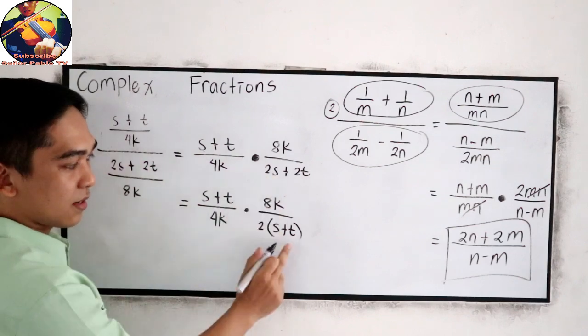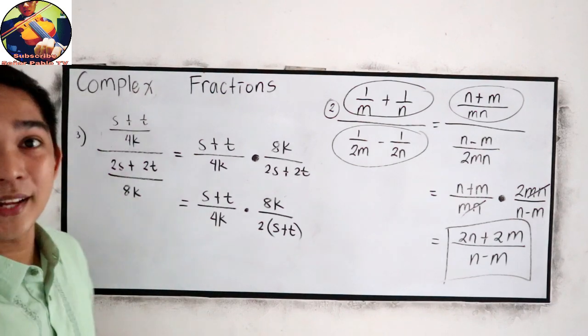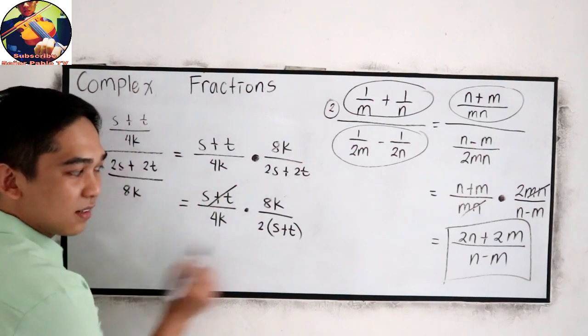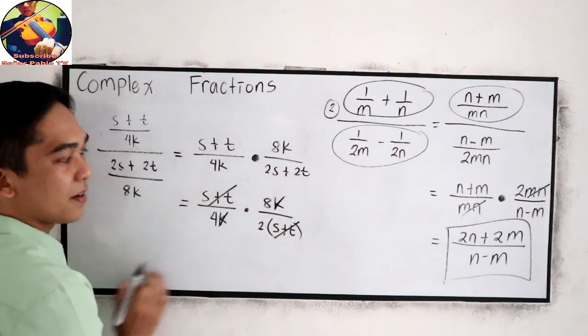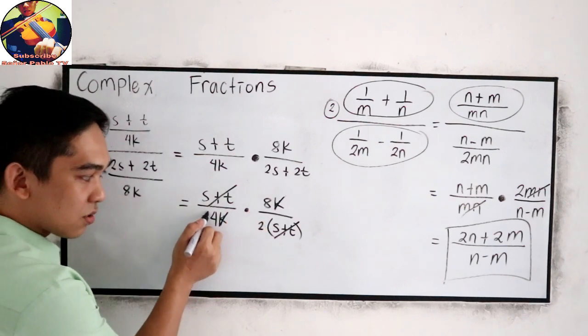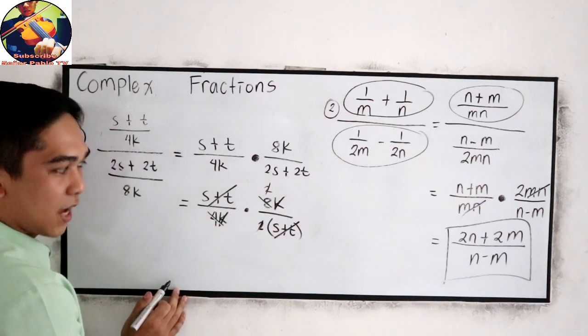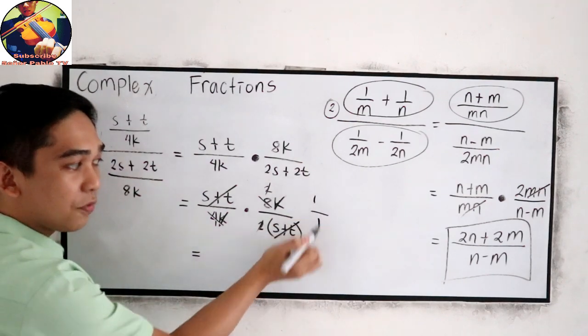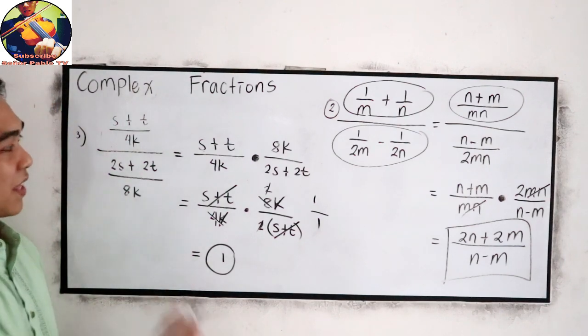Plus 2 times t, 2t. Now let's simplify. We can cancel s plus t and s plus t. Also we can cancel k and k. We can cancel 8 divided by 4. So that will become 2. And 2 divided by 2 will become 1. So our final answer will become 1 over 1. And 1 over 1 is 1. So our answer in number three is 1.